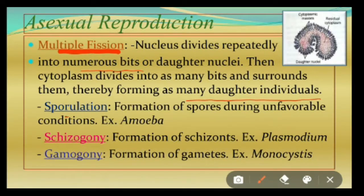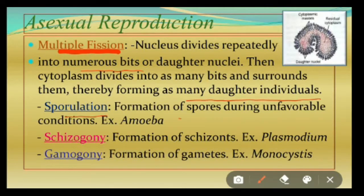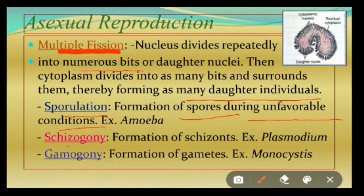This means multiple fission may lead to either asexual or sexual reproduction. Many types of multiple fission occur in different protozoans. Number one: sporulation, where the body of the parent cell forms spores especially during unfavorable conditions. All the pseudopodia in Amoeba are withdrawn, it becomes rounded, and it secretes a hard shell-like structure surrounding it, and spores are formed. Spore formation can also be seen in other protozoans such as Monocystis and Entamoeba.